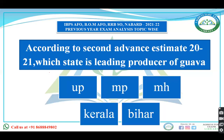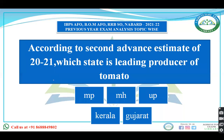Next question: according to the second advance estimate 2020-21, which state is the leading producer of guava — UP, Madhya Pradesh, Maharashtra, Kerala, or Bihar? The leading producer of guava is UP, followed by Madhya Pradesh. In terms of area also, UP has the highest area under guava cultivation, followed by Madhya Pradesh.